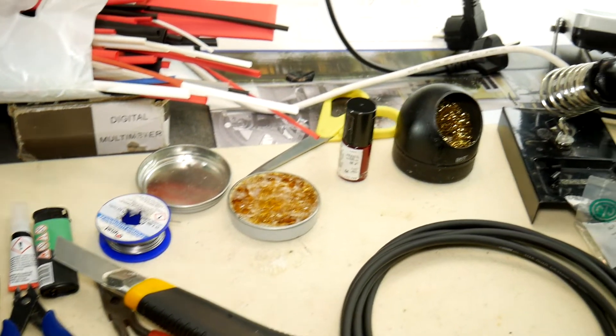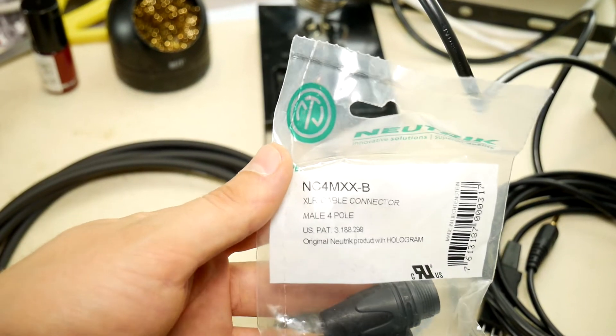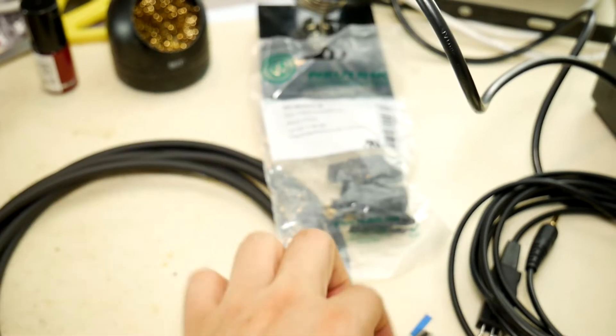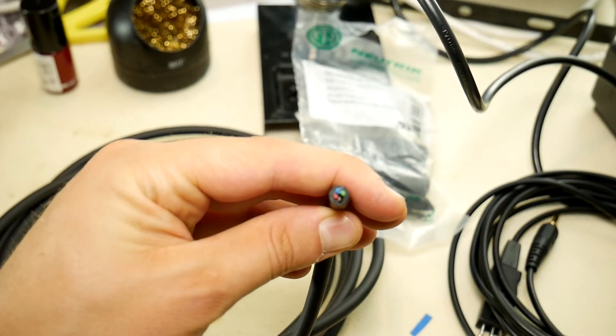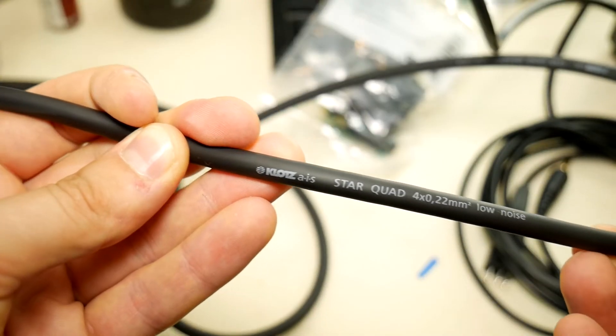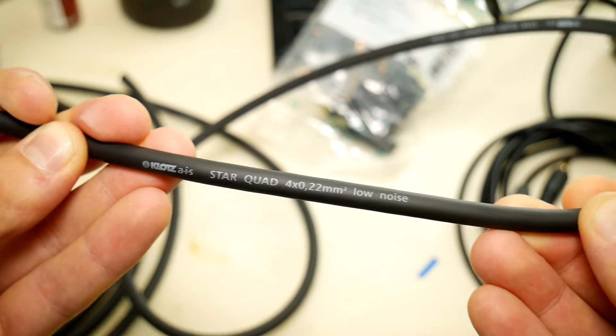To make the cable, you will need a soldering tool kit with different tools, then a 4-pin XLR connector plug, or another if your balanced amp has a different kind of output. You will also need a good quality audio cable with four cores. In my case it is Klotz Star Quad Low Noise, without unnecessary audiophile snake oil, just a good cable.